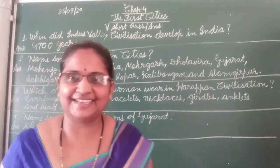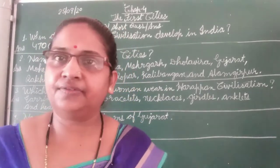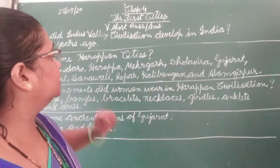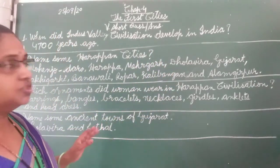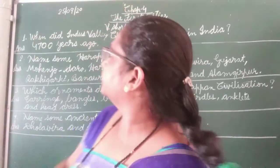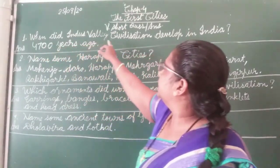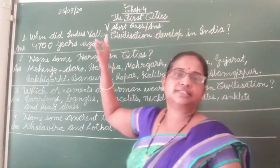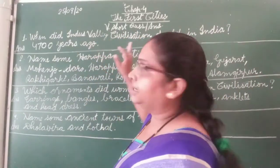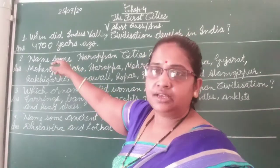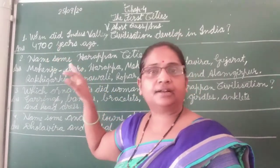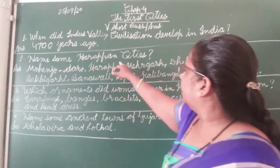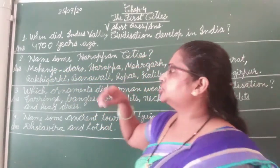Hello students, class 6. Today I am here with your very short question answers of chapter number 4, The Very First City. First question: when did the Indus Valley civilization develop in India? Answer: 4700 years ago.